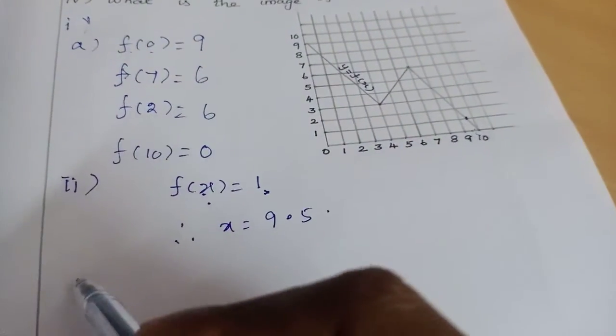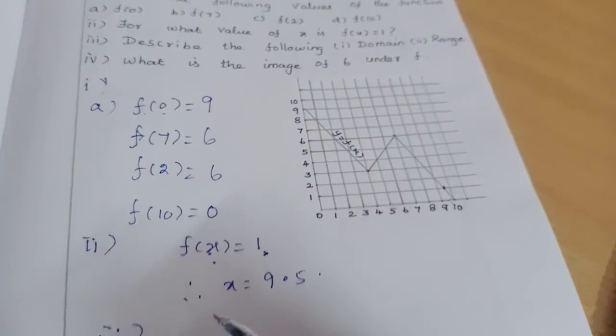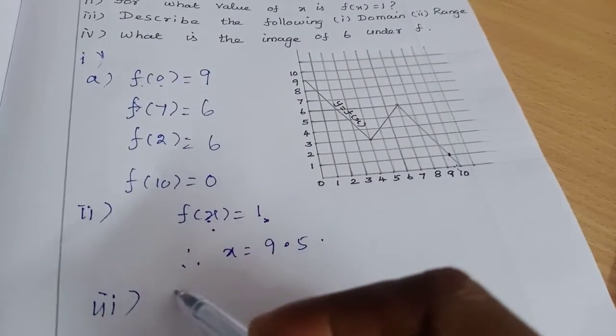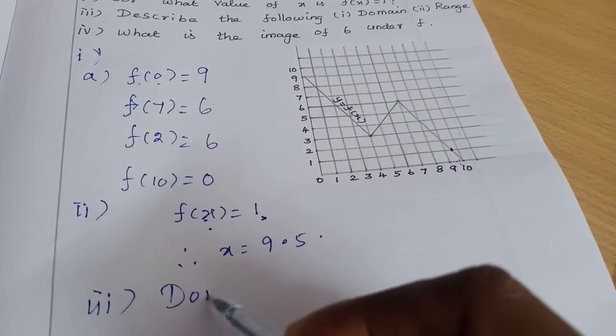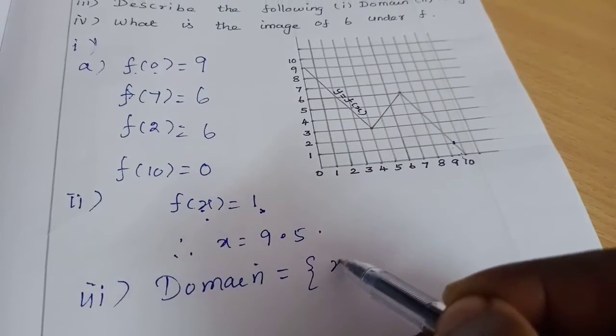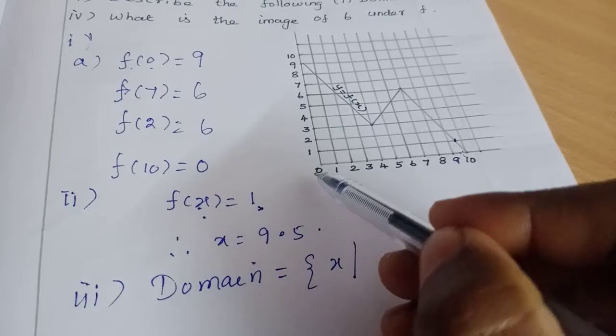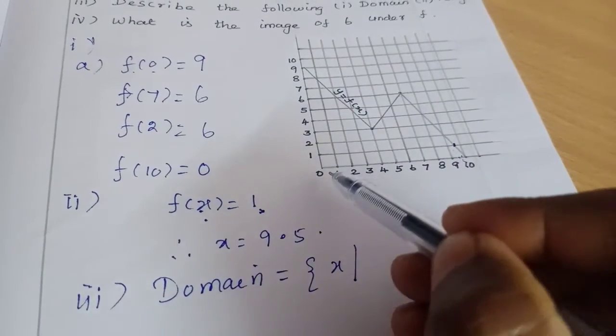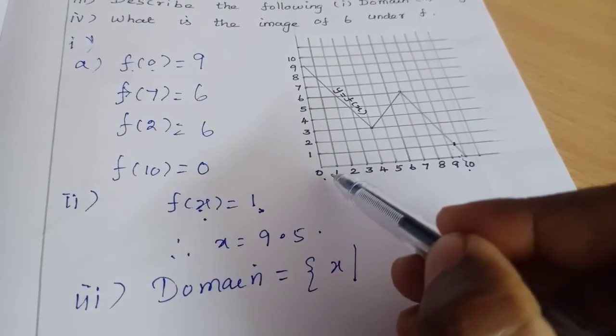Now third subdivision: describe domain and range. So domain is equal to set of x such that - the domain is 0 to 10. 0 to 10. We can see integers and decimals like 0.1, 0.2, up to 0.9.